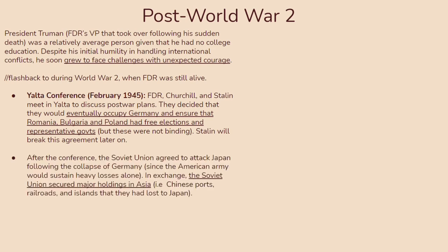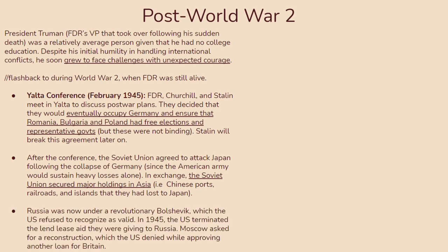Immediately after the conference, the Soviet Union agreed to attack Japan following the collapse of Germany, since the American army would probably sustain heavy losses alone. In exchange, the Soviet Union secured major holdings in Asia, like Chinese ports, railroads, and islands they had lost to Japan. Keep in mind that Russia was being ruled by a revolutionary Bolshevik government, which the US refused to recognize as valid, and in 1945 the US terminated the lend-lease aid they were giving to Russia.